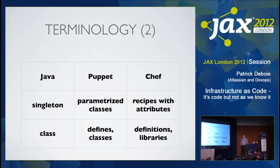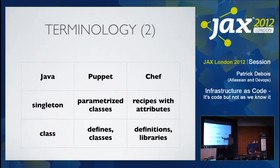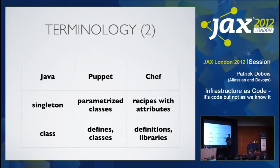If you have a developer background, you'll look for the equivalent of a class. In Puppet, there's a parameterized class but it's actually a singleton — you can only have that class one time installed, like Apache. They have a construct called a define, which is more like a class. So instead of saying service Apache 2 and package Apache 2, you make up a new keyword like Apache2 install or Apache2 server, and then you abstract that into a defined macro that you can reuse in the language.